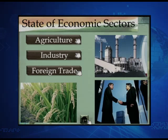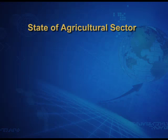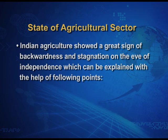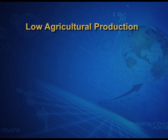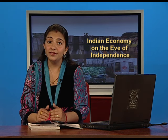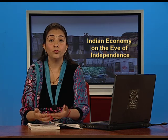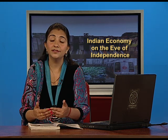Now let us talk about the state of the three economic sectors: agriculture, industry, and foreign trade. Indian agriculture showed a great sign of backwardness and stagnation on the eve of independence. Despite being the occupation of a large section of the population — around 85% of the Indian population was dependent on agriculture — this sector continued to experience stagnation.